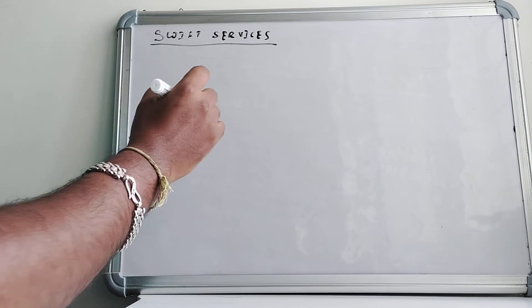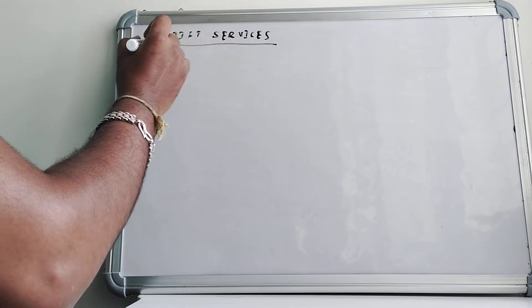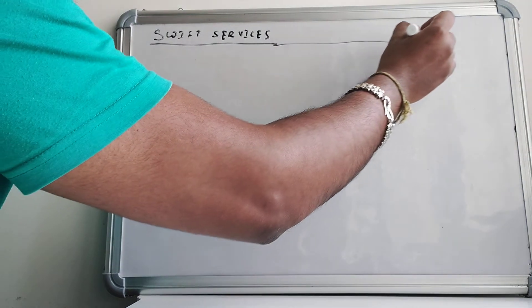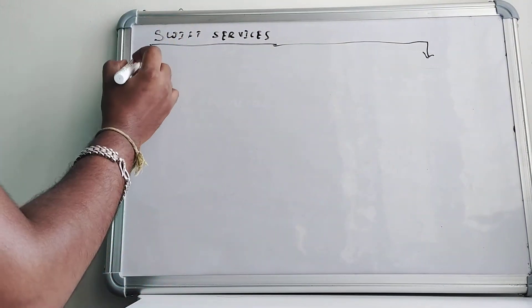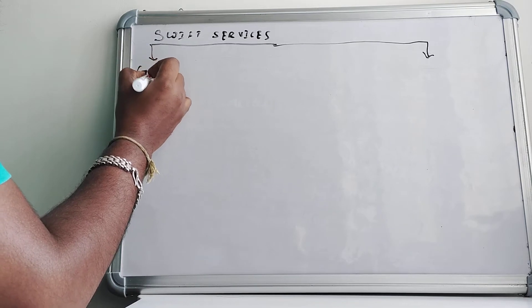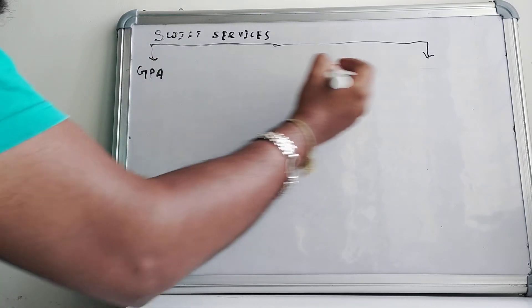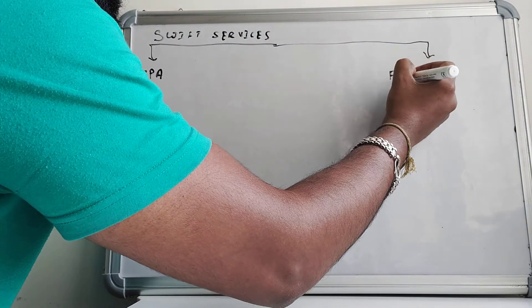Swift services is basically divided into two categories: first is GPA and second is Fin.